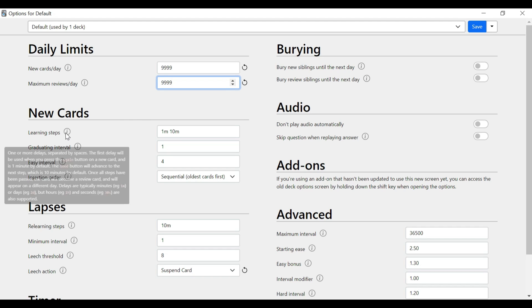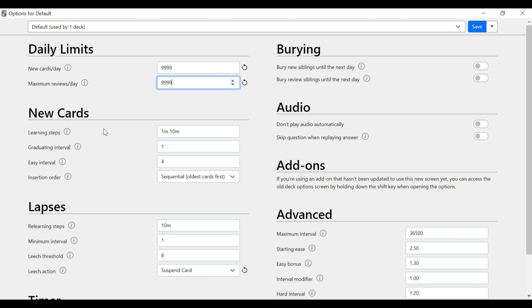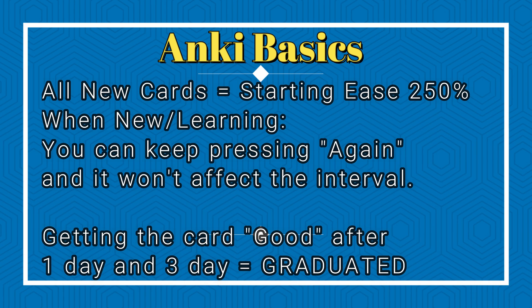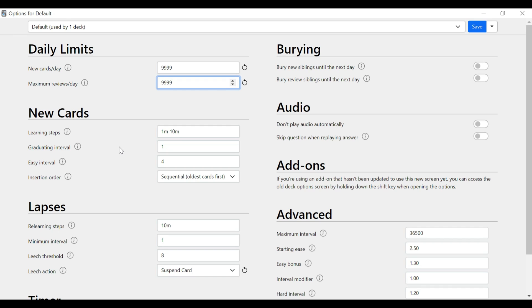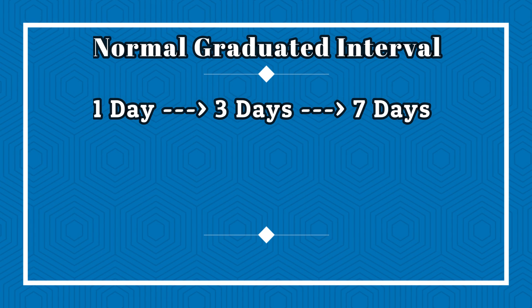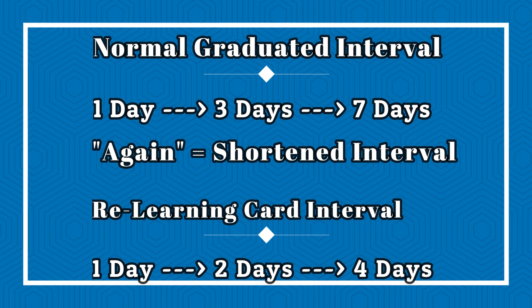Every card has learning steps. The default is that you'll see a card in one minute and then again in 10 minutes, then graduate the card. The problem is you don't want to graduate cards too early, because once they're graduated, when you get them wrong it does something called shrinking the ease. Every card has a starting ease, and if you get graduated cards wrong a lot, you're going to shrink the ease, which shrinks the interval. For example, normal interval might be one day, three days, seven days. If you press again a lot, it might become one day, two days, four days — you're basically telling the program you need to see it more often. So I'm going to change the learning steps to 10 minutes and then 1440 minutes, which is the same as one full day.